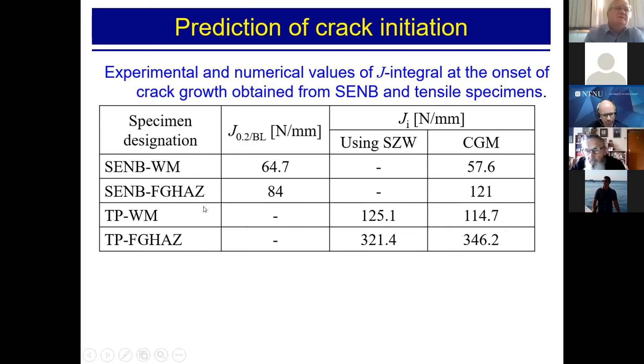the first two were for single edge notch beam specimen. That was in two dimensions. The tensile panel was in three dimensions. And for that, we really got excellent agreement. 114.7 versus 125.1 and 346.2 versus 321.4. Having in mind that those were the first results for the weldments and their different zones, we were really satisfied with these results.